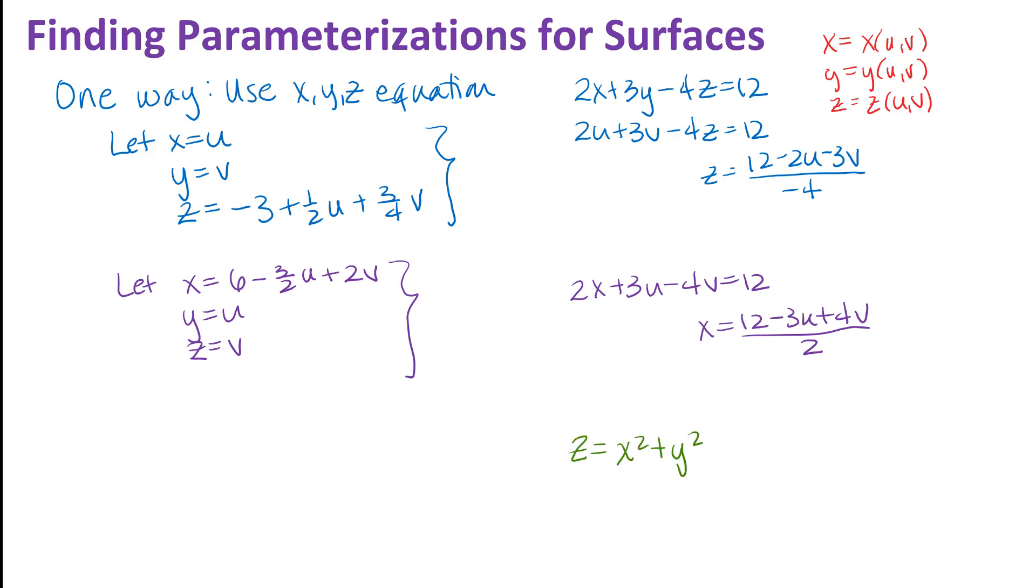So I've written down here near the bottom of the screen an equation for a paraboloid. This is a paraboloid with vertex at the origin that opens up. And it is already written in explicit form. It's solved for z. So one way, an easy way to parameterize this would be just to let x be u and y be v. And then our z just falls right out. We'll just put u in place of x and v in place of y. And so that's a perfectly good parameterization for that paraboloid.